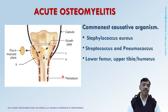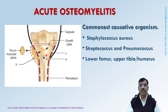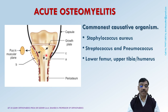Coming to the etiopathogenesis, Staphylococcus aureus is the commonest causative organism. Others are Streptococcus and Pneumococcus. These organisms reach the bone via blood circulation. The primary focus of infection is generally not detectable. The bacteria, as they pass through the bone, get lodged in the metaphysis. The lower femoral metaphysis is the commonest site. Other common sites are the upper tibial, upper femoral, and upper humeral metaphysis.